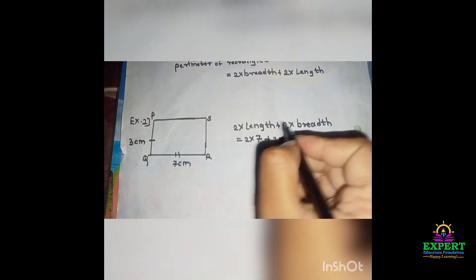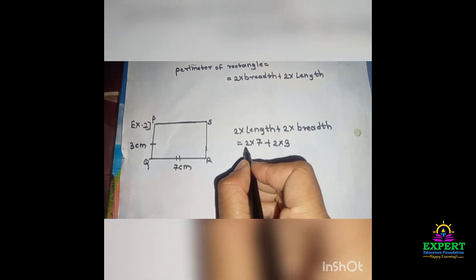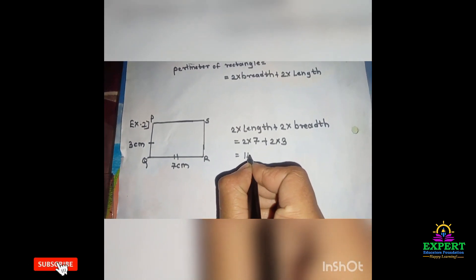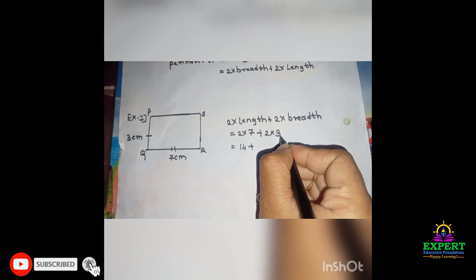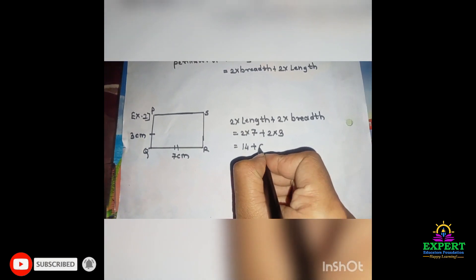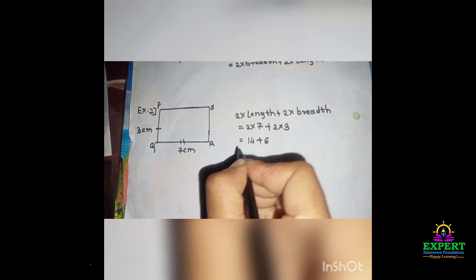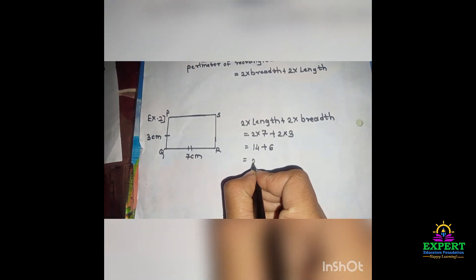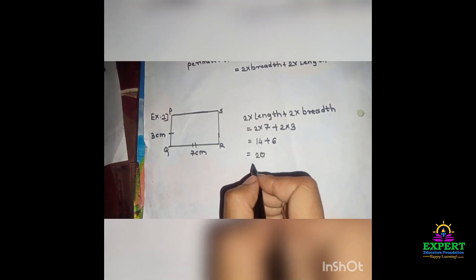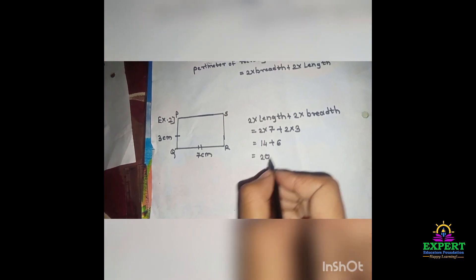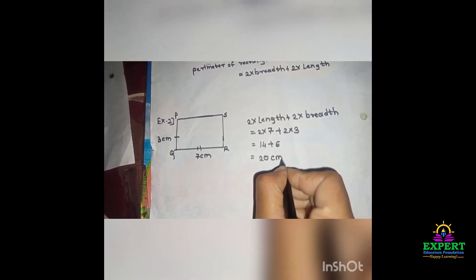7 into 2 equals 14. Plus 2 into 3 equals 6. The sum is 20. Therefore, the perimeter of the rectangle is 20 centimeters.